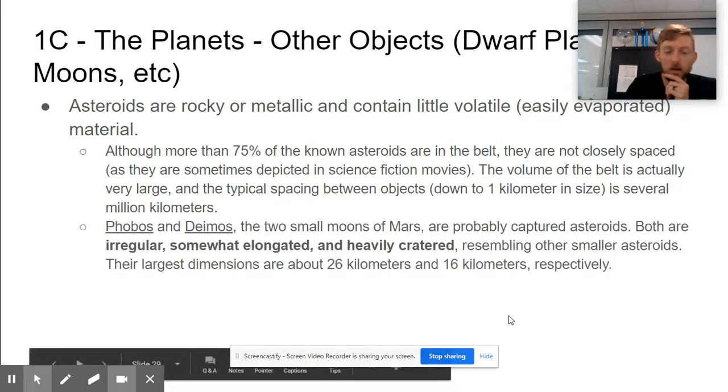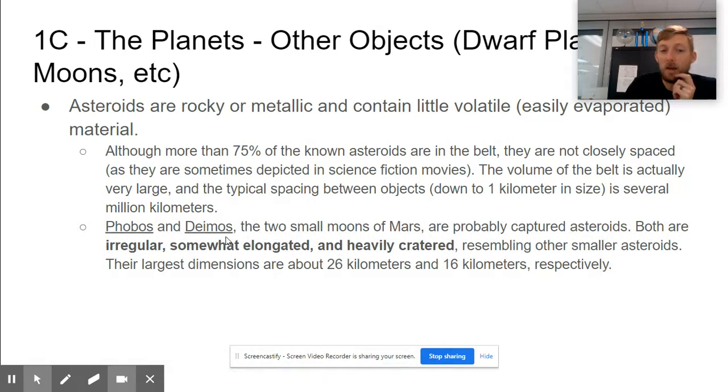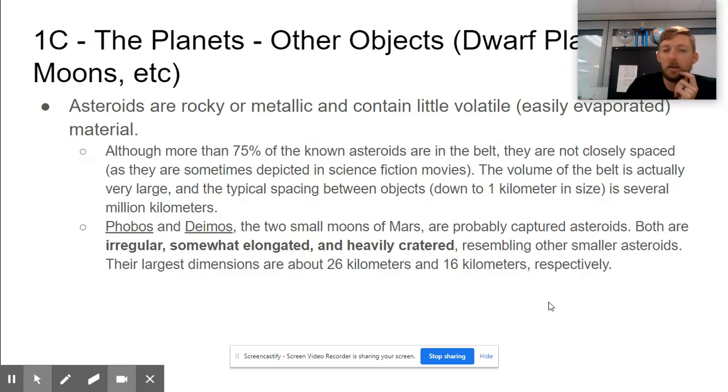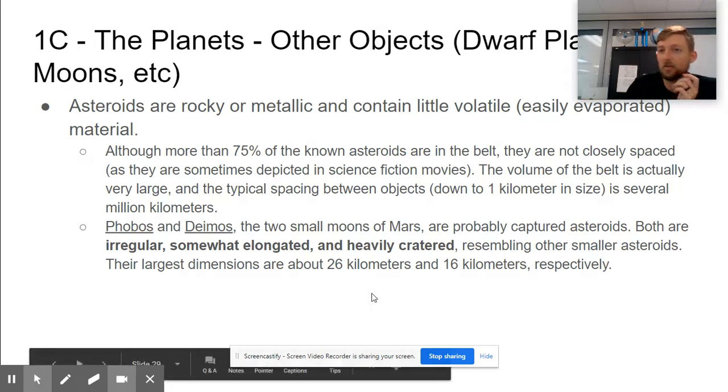Phobos and Deimos, the two small moons of Mars, are probably asteroids that have been captured and are now moons. Both are irregular—not spherical but somewhat elongated—and heavily cratered, meaning they've been hit a lot from other space stuff, probably other asteroids.